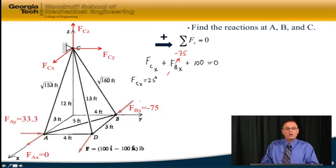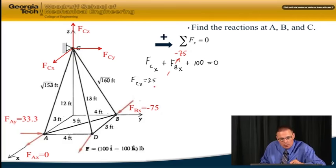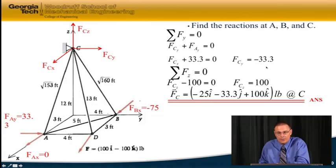And then why don't you go ahead and do the sum of the forces in the Y and Z direction. And once you do that, you should get F_CY as minus 33.3, F_CZ equals 100. And so now I also have the reaction forces at C. When I put them all together, I got minus 25 in the I direction, minus 33 in the J direction, plus 100 K pounds, all acting at C. And we have now found all the reactions acting on this truss structure, and we'll come back next module to do the rest of the problem.